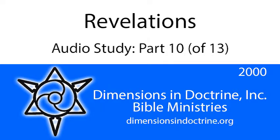In Revelation 14, verse 6: 'I saw another angel fly in the midst of heaven, having the everlasting gospel to preach to every nation, kindred, tongue, and people.' Verse 8: another angel proclaiming. Verse 9: a third angel saying with a loud voice, 'If any man worship the beast and receive his mark, he is going to be cast into the lake of fire.' This particular angel is from that college of heralds — a crier with a message to say to those of the earth.